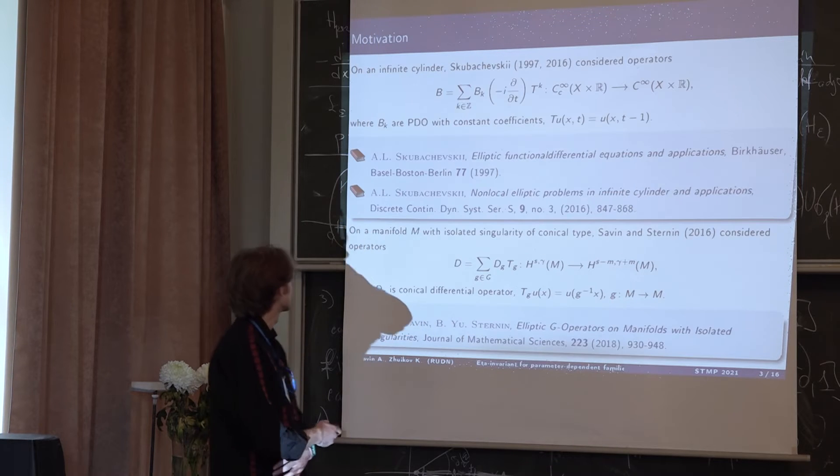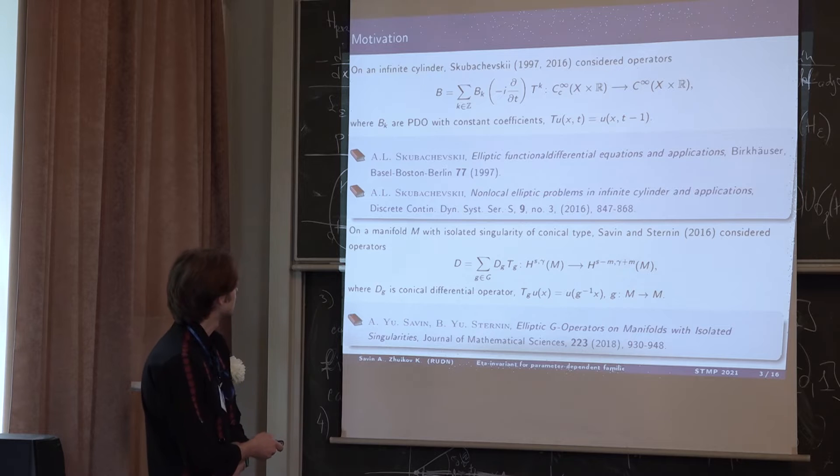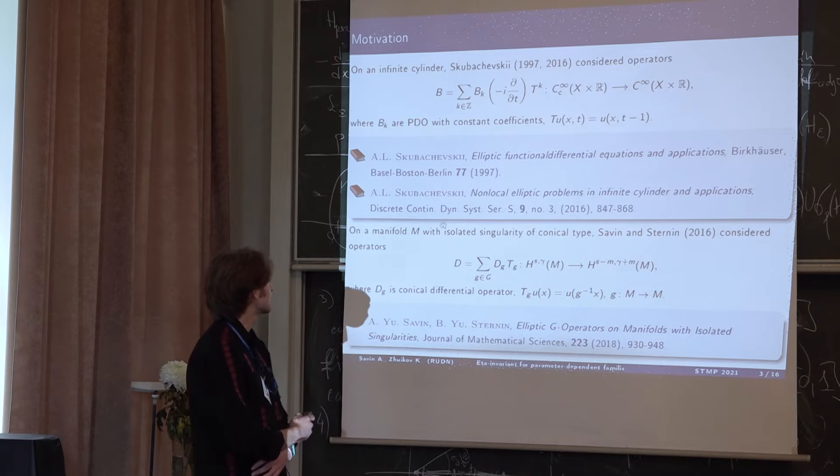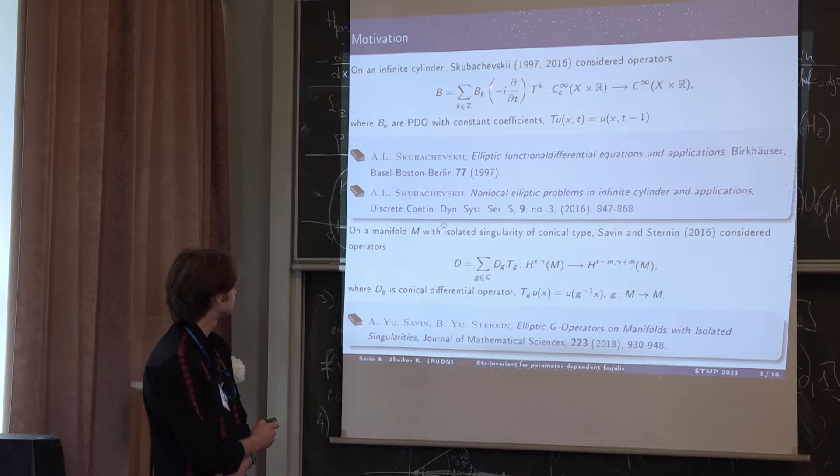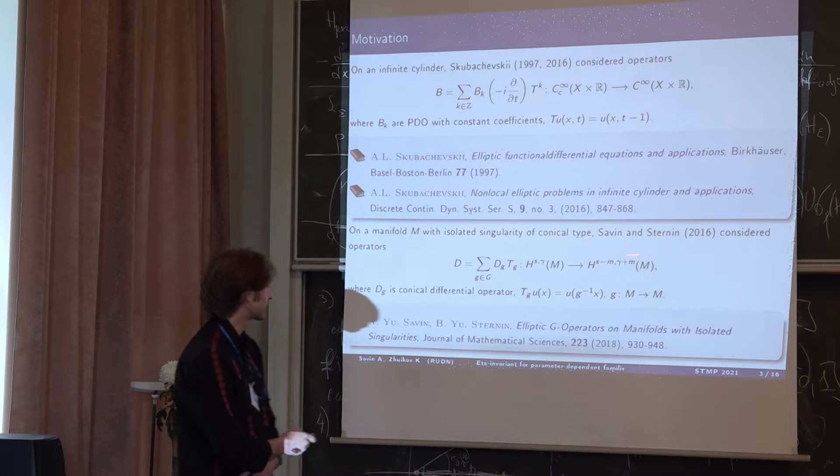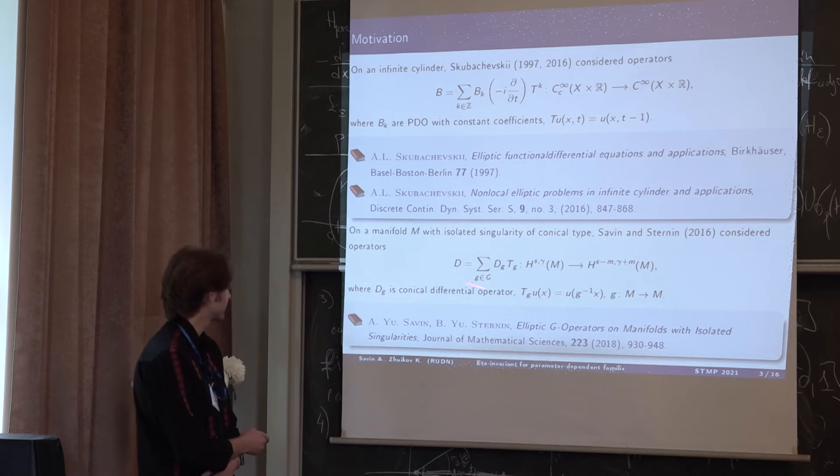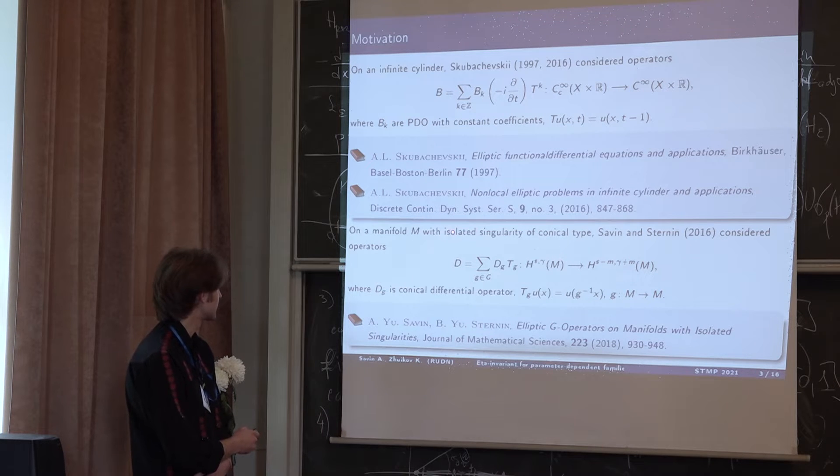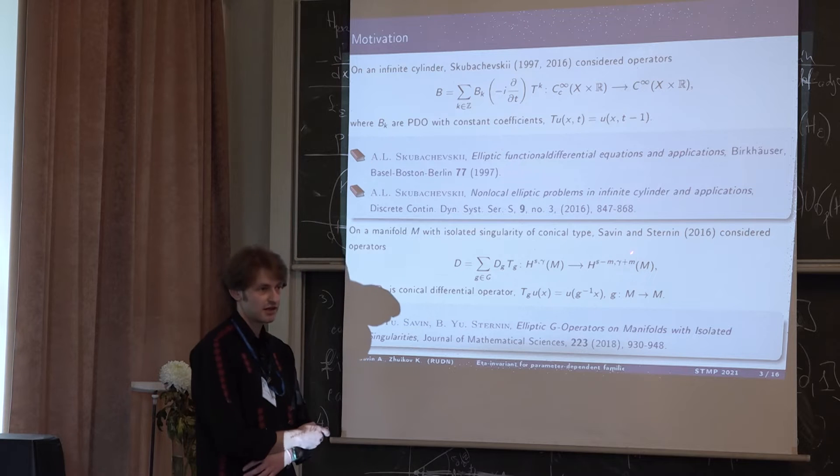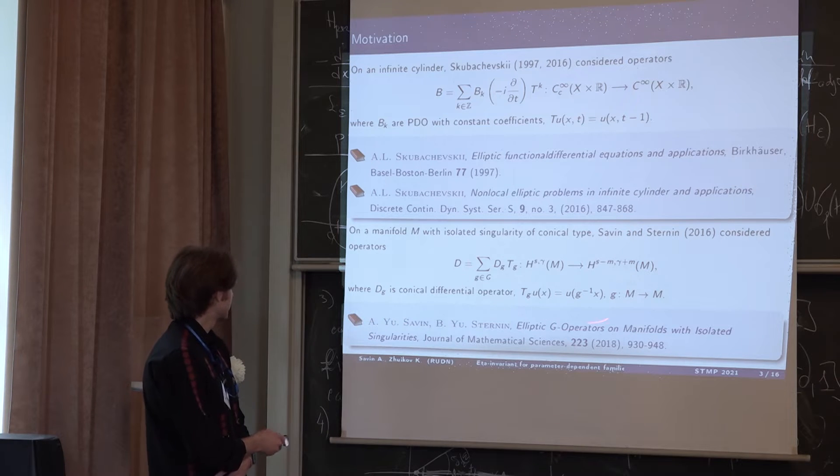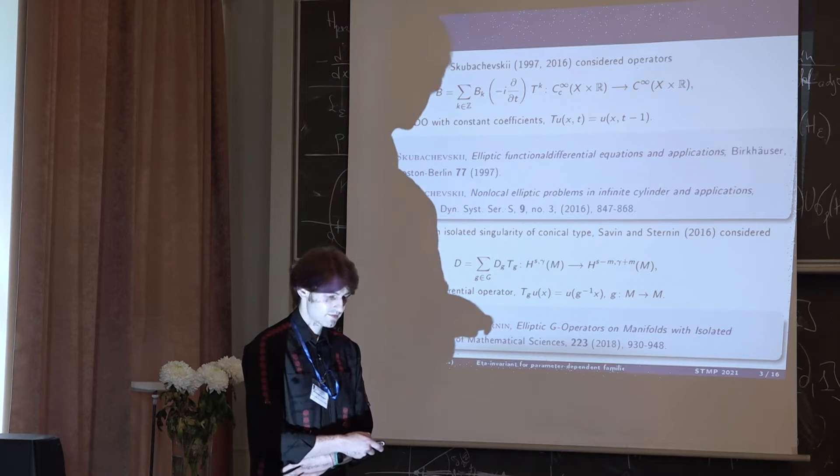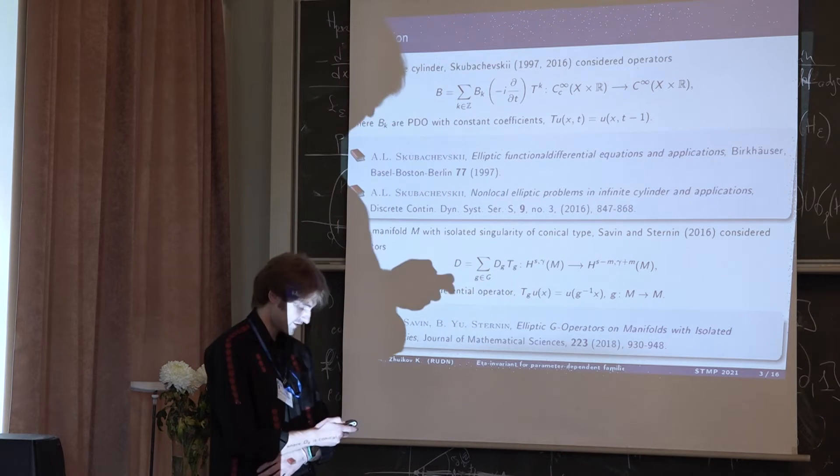Now I'll tell you something about the motivation. Firstly such operators were considered by Skubachevsky in these papers. He considered such operators on an infinite cylinder. In 2016 Savin and Sternin considered this operator T acting on a manifold with isolated singularity of conical type. After a Mellin transform, we get exactly our operator. In this paper, they proved the Fredholmness property, but the index formula remains open.